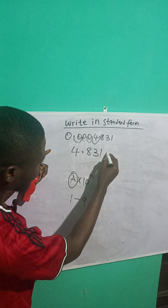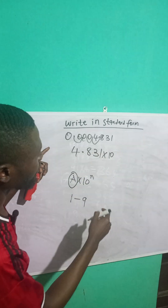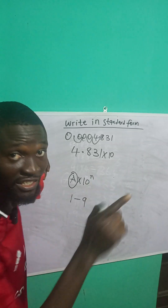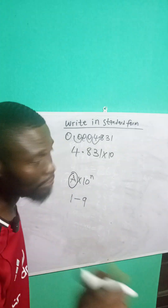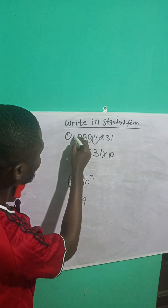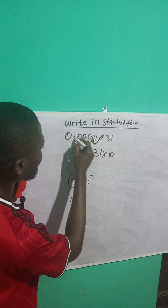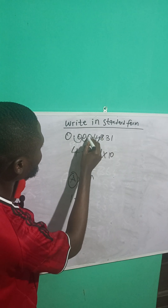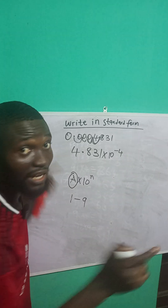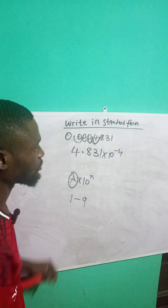From the formula, times 10 raised to power n. This 'n' represents the number of times I moved from my decimal point. So I moved 1, 2, 3, 4 times. That gives us raised to power minus 4.